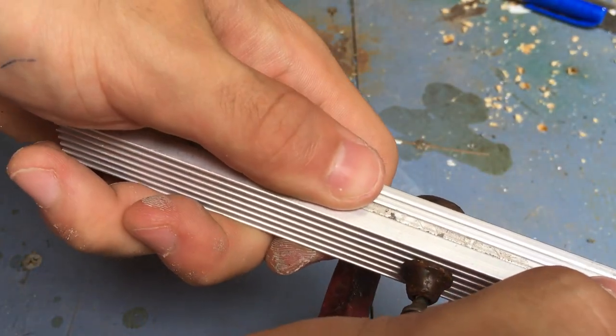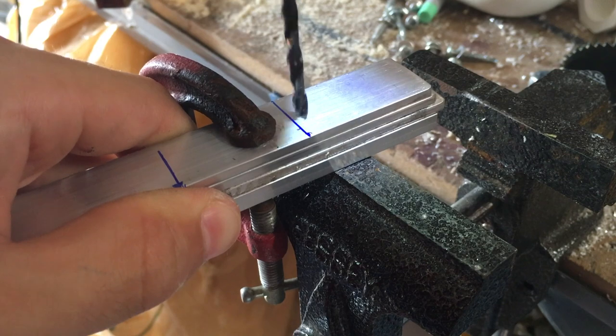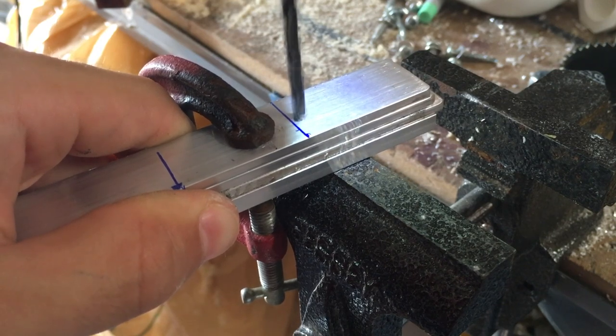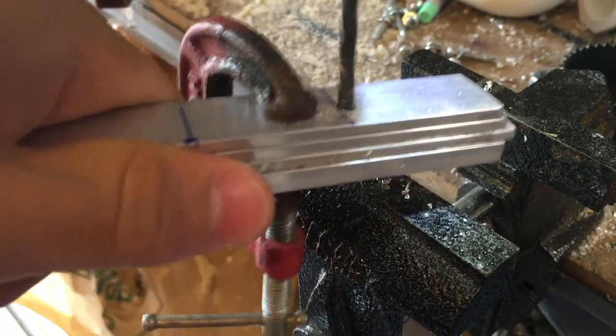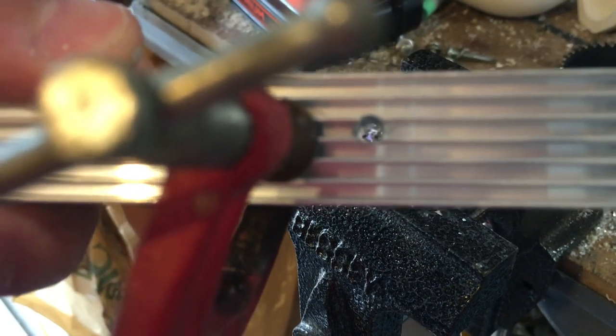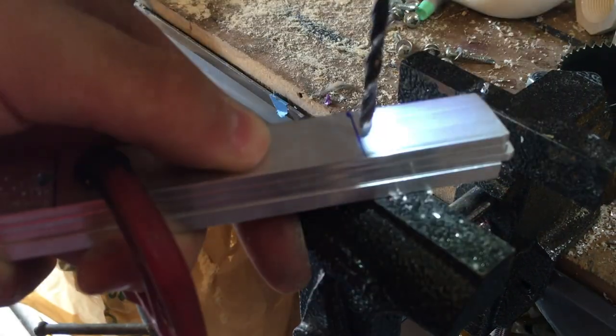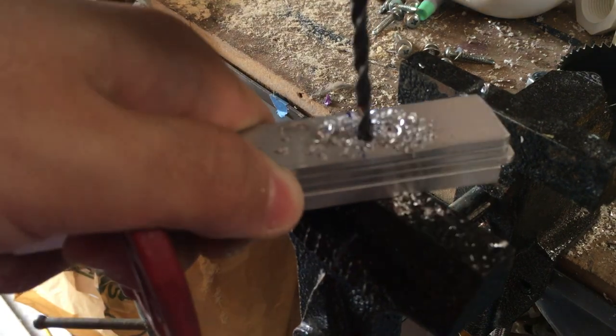I then clamped all the pieces together so that I could drill a hole through them at the same time so that they're all perfectly aligned. I decided to do it this way because not all the pieces came out the same size, so marking it all out would have been much harder. I drilled a total of three holes so that all the pieces would be clamped together really tightly.